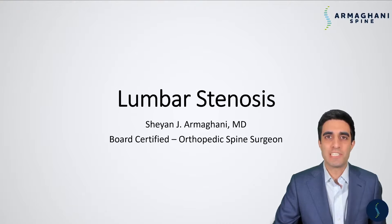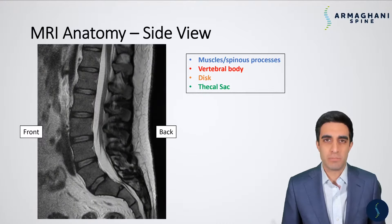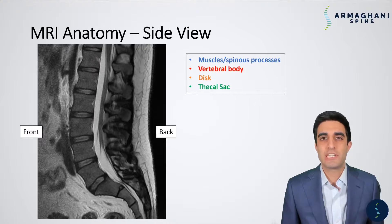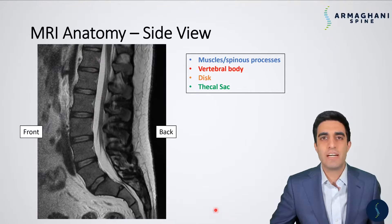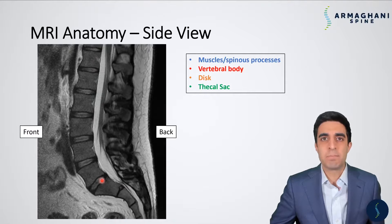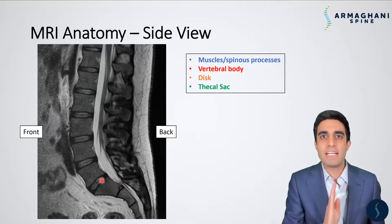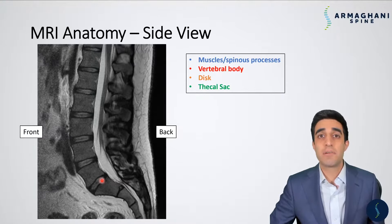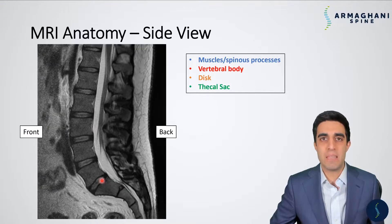Now let's begin our discussion on lumbar stenosis. Before we get started on this particular condition, we have to have a better understanding of what the normal MRI anatomy is of the lumbar spine. Patients frequently come in already with an MRI, so let's take a look at some of these anatomic landmarks. You're going to see a normal MRI of your low back — this is completely normal and this is a side view. An MRI basically takes slices of your body, and this particular slice goes right down the middle of your body, so there isn't really a left or a right — we're looking at you right in the middle.